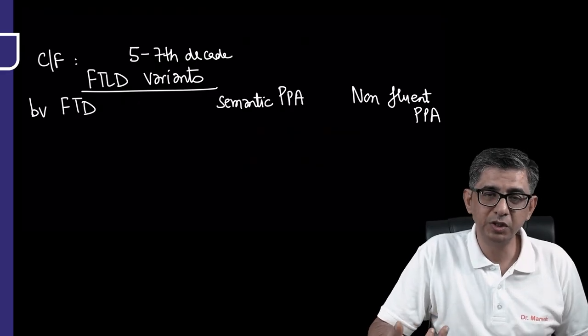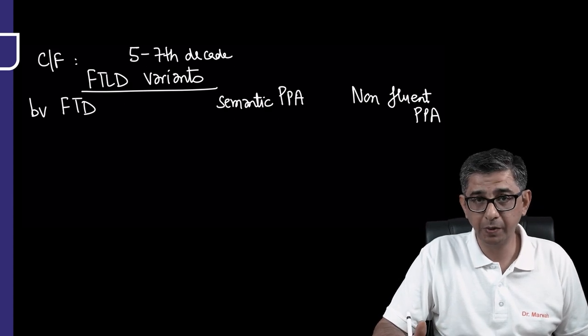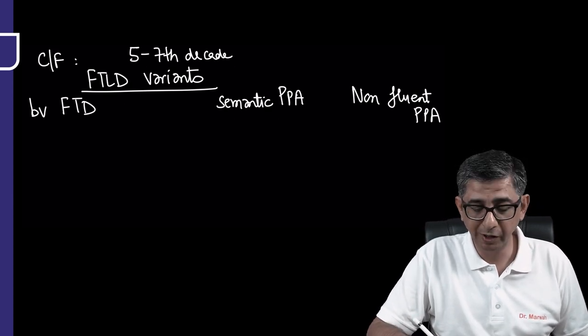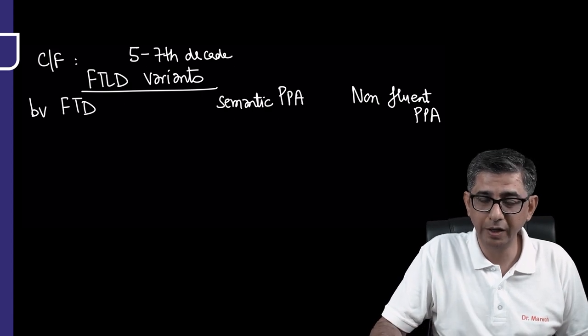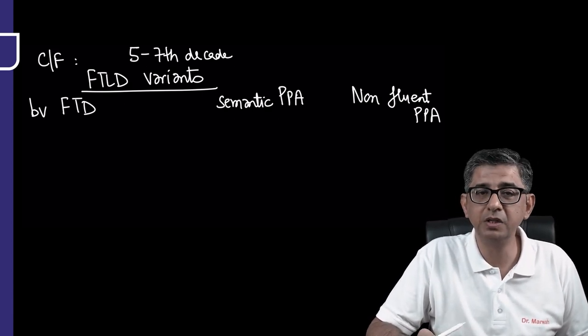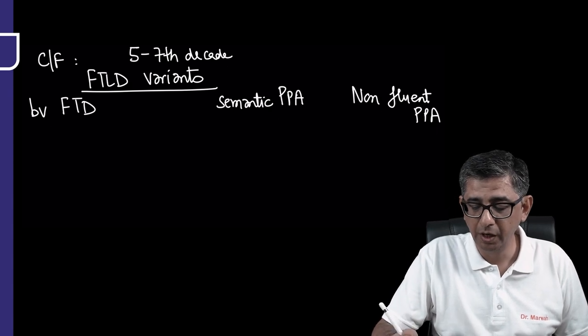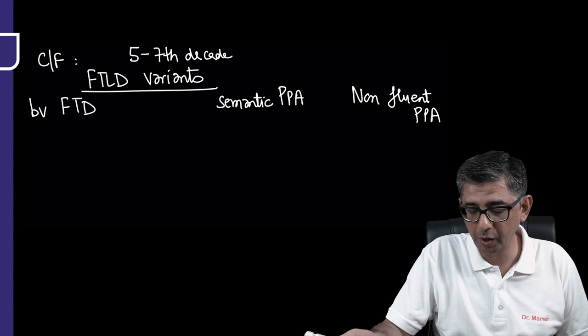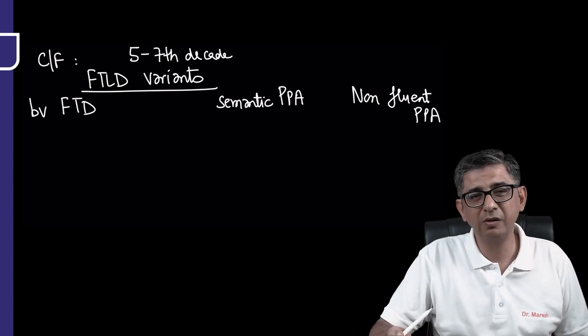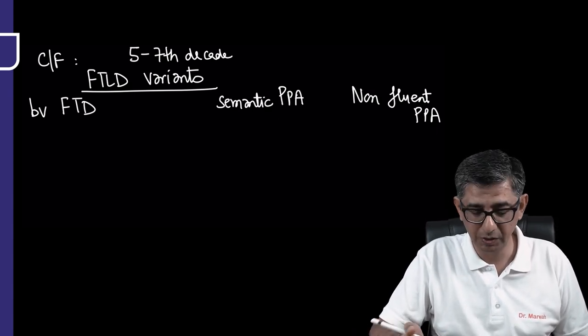Clinical features of the disease subdivided from the clinical perspective into three variants for frontotemporal lobar degeneration: behavioral variant (bv FTD), semantic primary progressive aphasia, and non-fluent primary progressive aphasia. Let me explain how to remember this.